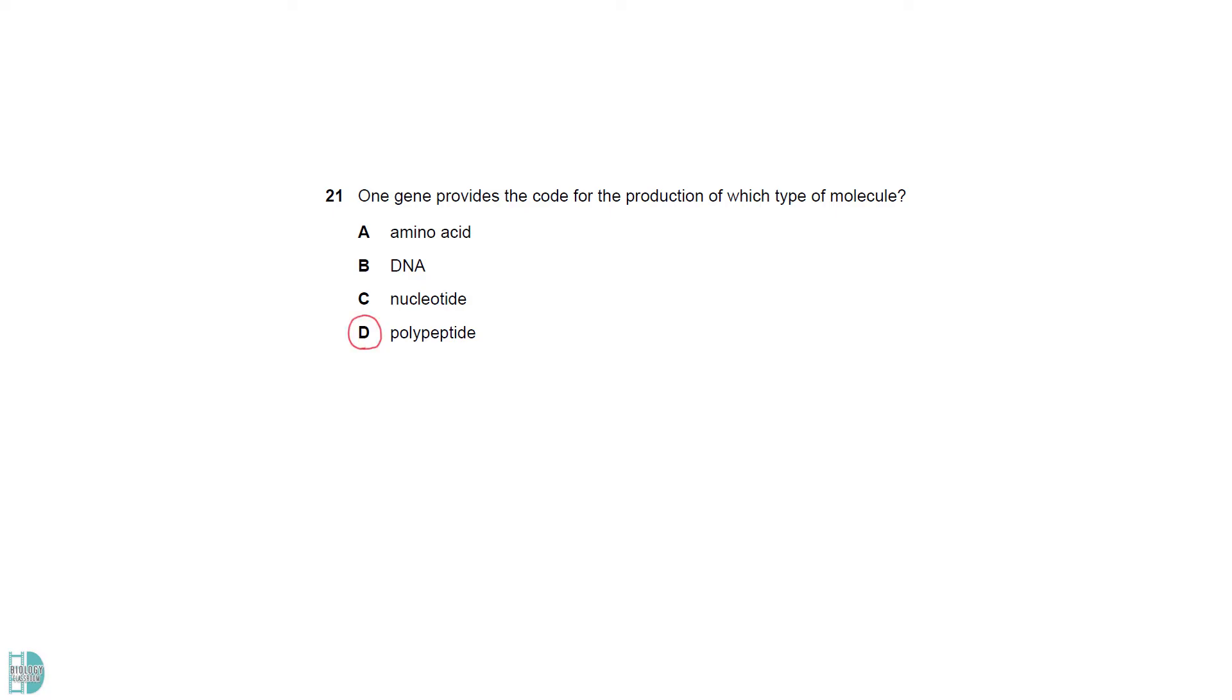A gene calls for the production of a polypeptide. It is wrong to say it calls for the production of amino acids, because the information in a gene determines the sequence of amino acids being added to polypeptide, not the synthesis of the amino acid.